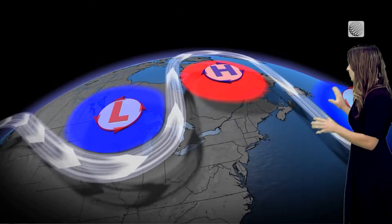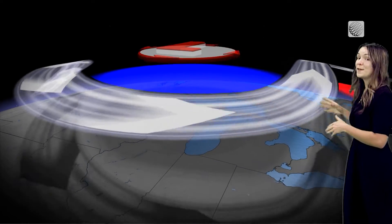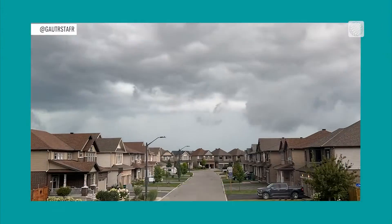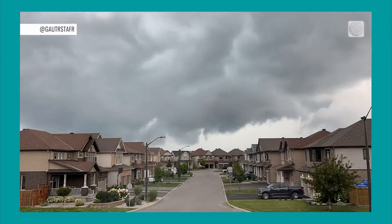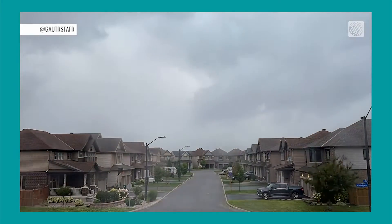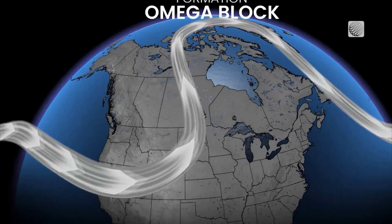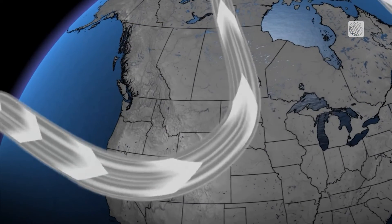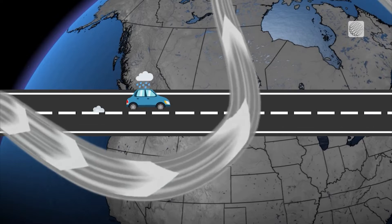But if you're underneath the low, the opposite can happen. Cloudy, rainy, or even stormy weather can trigger along the fronts. And in behind it, cooler than normal air could bring a chill to your region.